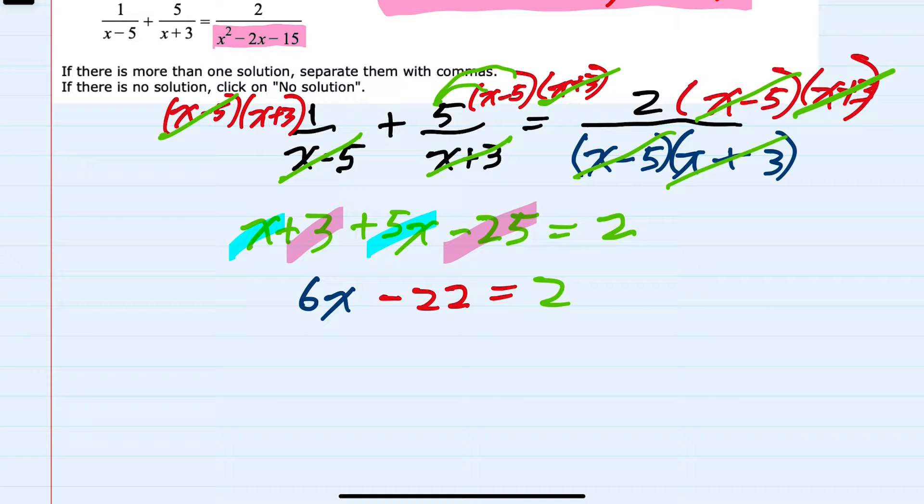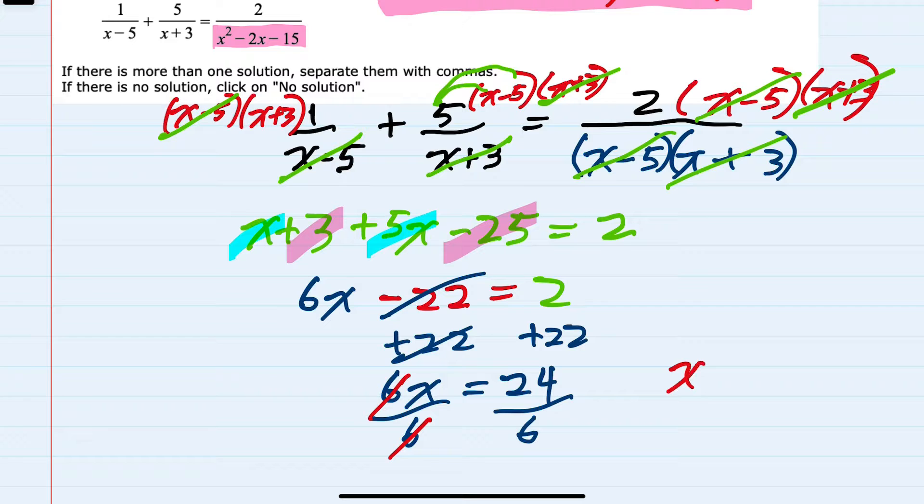So one step closer to being solved. To isolate the x, we can now add 22 to both sides. Cancelling the 22 on the left leaves me 6x equals 24 on the right-hand side. And then dividing by 6 on both sides leaves me an x on the left and a 4 on the right.